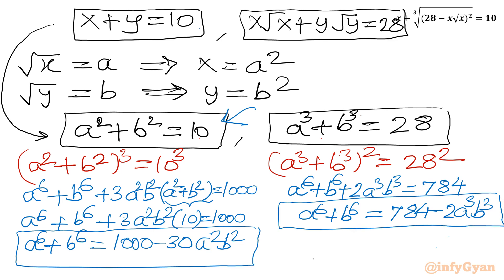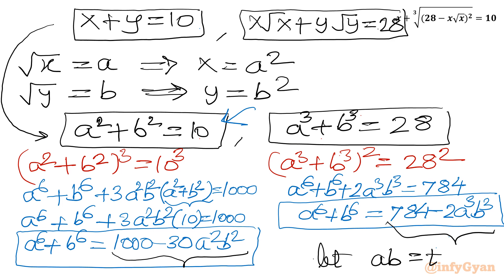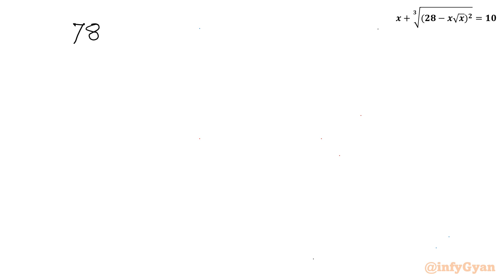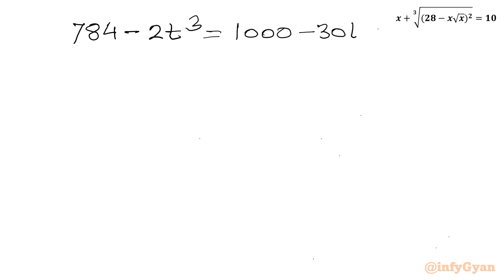Both equations share the same left-hand side a⁶ plus b⁶, so we can equate the right-hand sides. I will also use the substitution ab equal to t. So we get: 784 minus 2t³ equal to 1000 minus 30t².